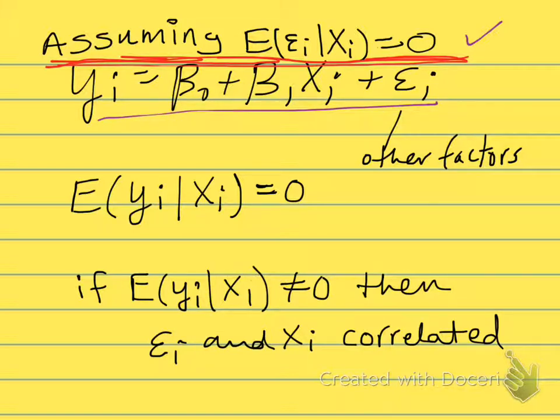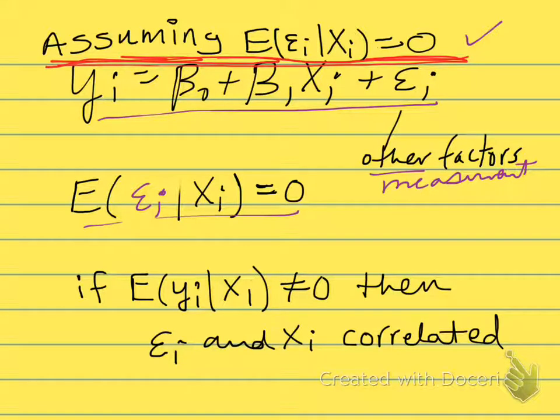This epsilon i stands for other factors and measurement error. This should be ei. We'll usually assume that the expected value of the error term, conditional on the xi, is equal to zero.